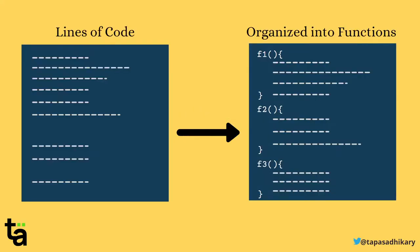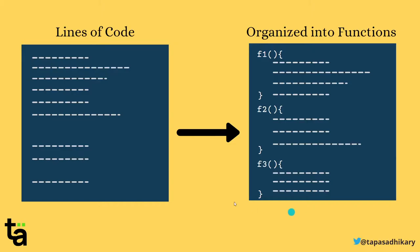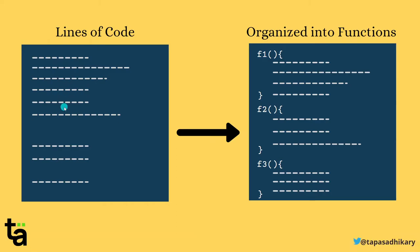To understand this, we'll first understand what synchronous means in JavaScript, and then talk about what exactly asynchronousness means. When you write code in JavaScript, you write it line by line. The JavaScript engine will come into picture and execute each line at a time, top-down. That's what makes JavaScript sequential — synchronous. But in real life programming, JavaScript has something called functions, and functions are first-class citizens in JavaScript.